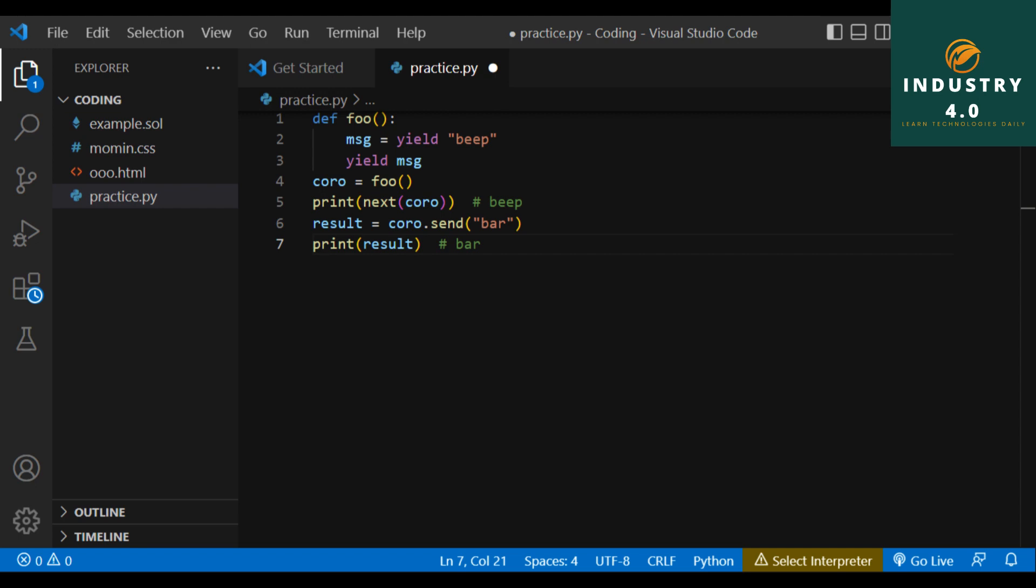We can understand in the above example that when we move the generator coroutine to the first yield statement using next(coro), that the value beep was returned for us to print.